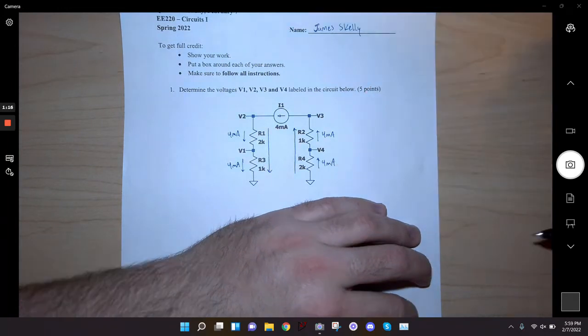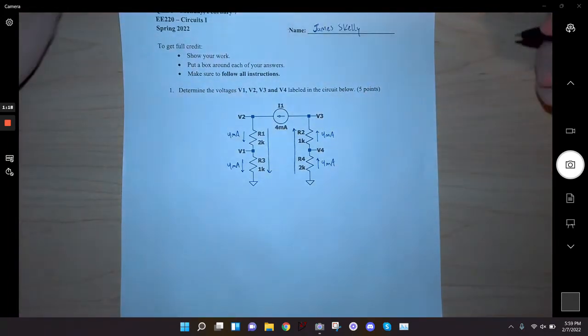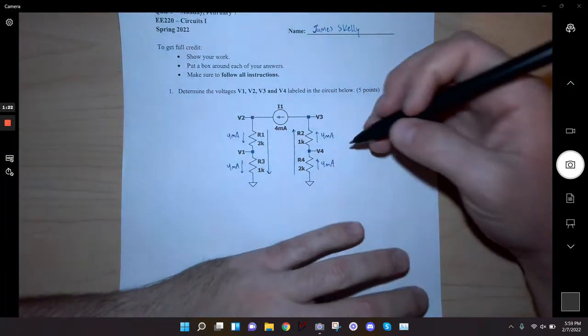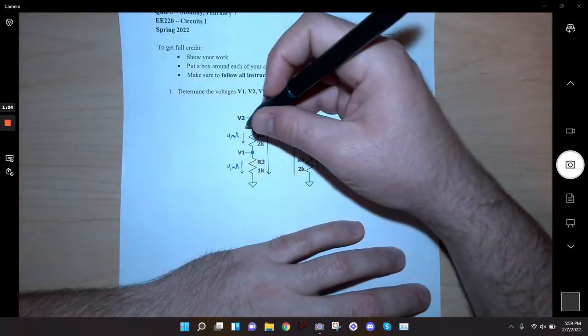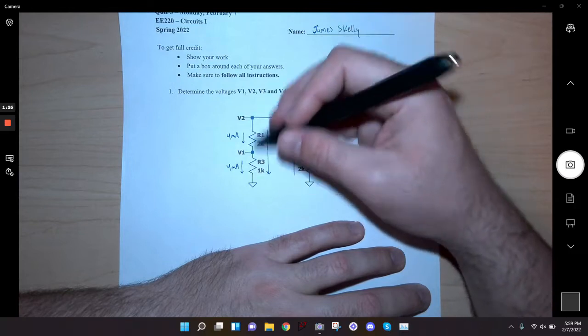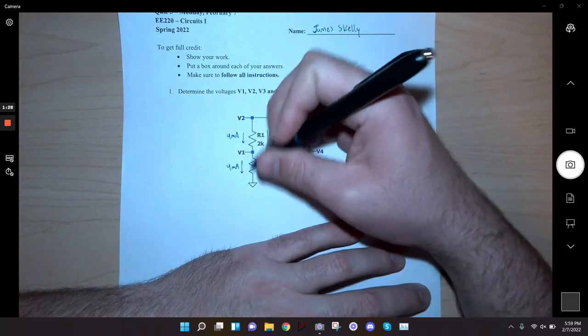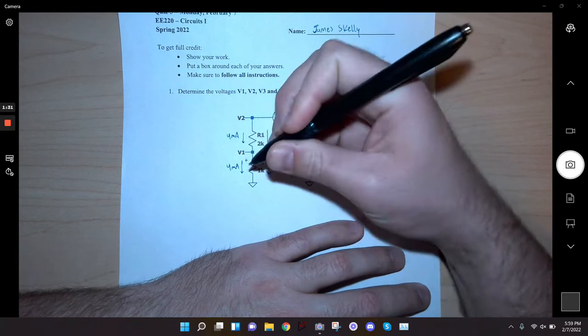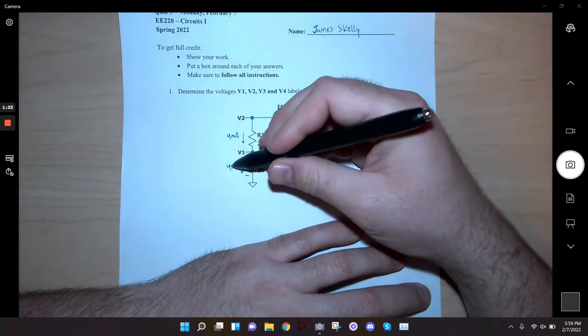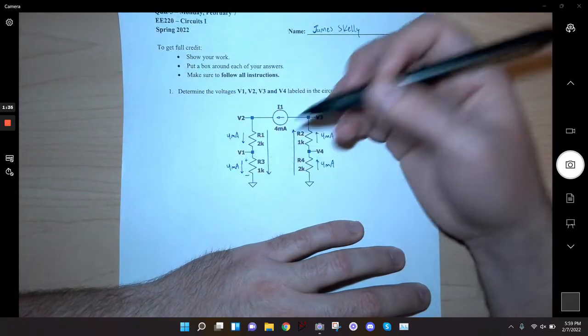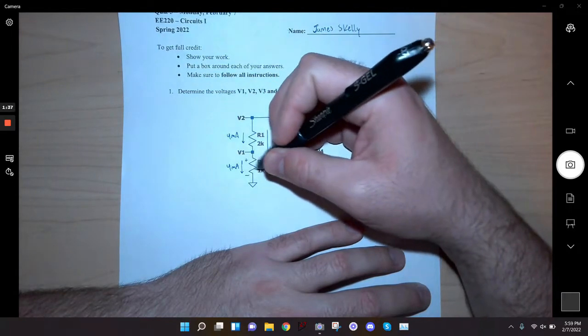Now we just need to find all the voltages. This side is pretty easy because this is pretty standard. We've got current flowing down through this resistor. We know that the voltage drop across the resistor is equal to whatever the current is times whatever the resistance is, which means the drop across this resistor is 4 volts.